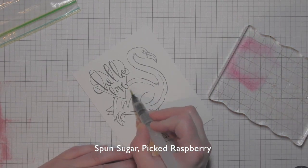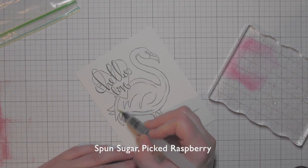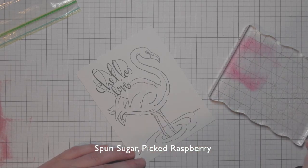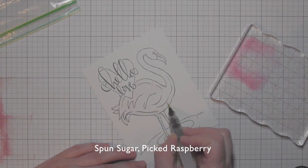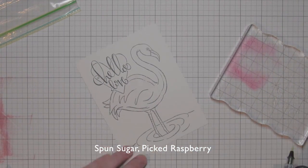I'm going to be sharing a watercolor card today using one of those. This is the flamingo. This is an A2 sized panel, so all you have to do is add a little color and you instantly have a card.